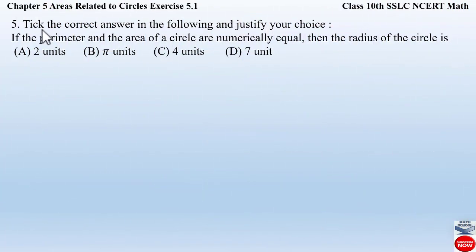Question number 5 from Exercise 5.1, Chapter 5: Areas Related to Circles. The question says tick the correct answer in the following and justify your choice. If the perimeter and area of the circle are numerically equal, then the radius of the circle is...